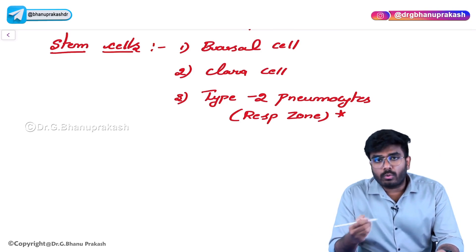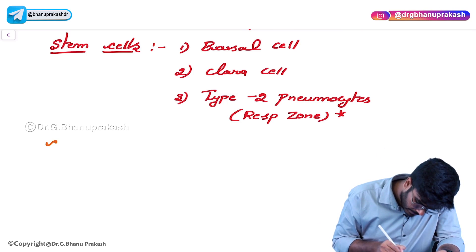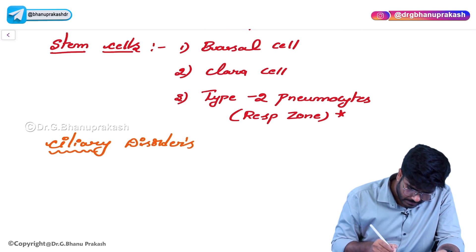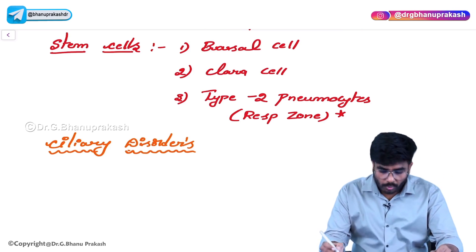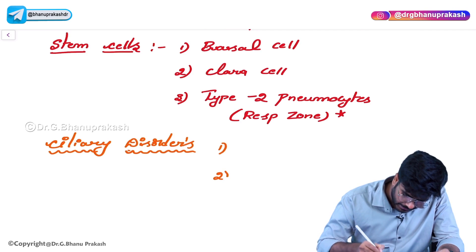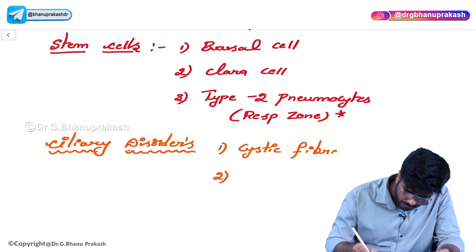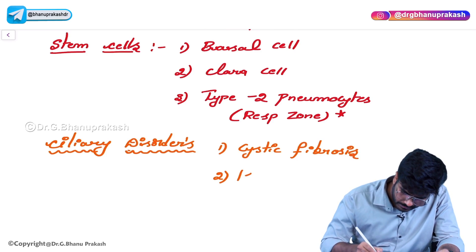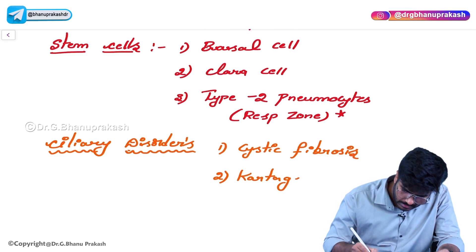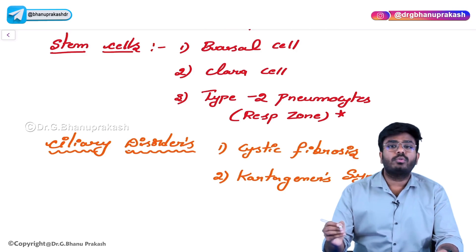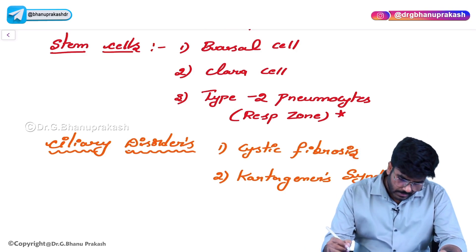Now, after discussing this, let's talk about the ciliary disorders - just a pathological link which you should know. There are two important ciliary disorders in the respiratory tract. The first disorder is called cystic fibrosis and the second disorder is Kartagener's syndrome. These two important disorders are seen in the conducting zone.